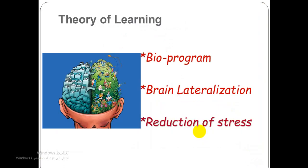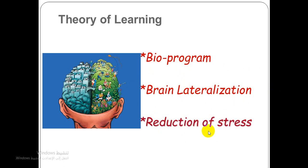What is the theory of learning according to the total physical response method? We have three learning hypotheses or assumptions, which are biogram, brain lateralization, and reduction of stress. Brain lateralization defines different learning functions. Reduction of stress means that stress intervenes between learning and what is to be learned.